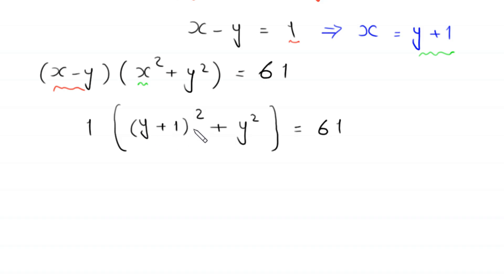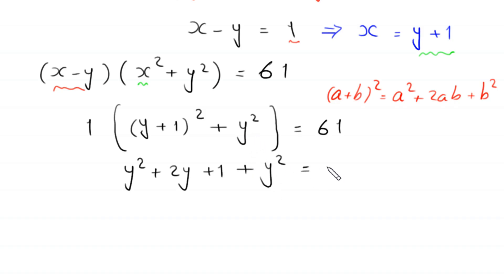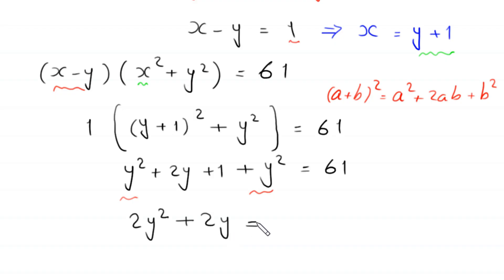Now we find (y plus 1) squared by using the algebraic identity (a plus b) squared equals a squared plus 2ab plus b squared. So (y plus 1) squared equals y squared plus 2y plus 1. Substituting back: y squared plus 2y plus 1 plus y squared equals 61. The two y squared terms combine to give 2y squared.